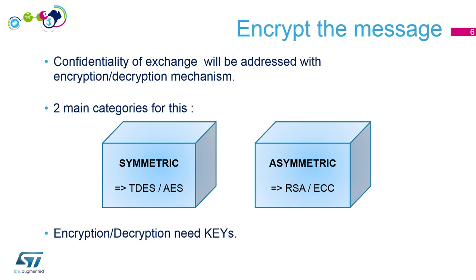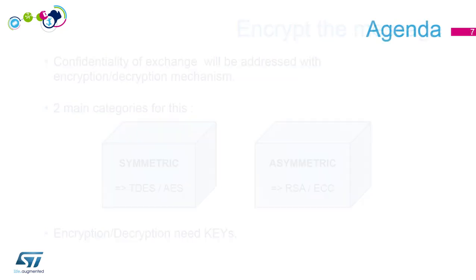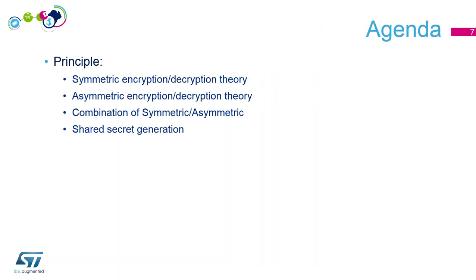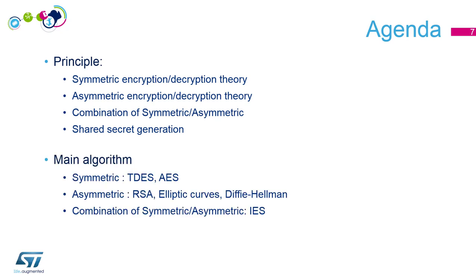For encryption and decryption, we will need keys. In this MOOC, we won't address how to protect those keys, but only how we use them. Our agenda: first the principles — symmetric encryption/decryption, asymmetric encryption/decryption, then a combination of both, and how we can generate a shared secret. Then we will talk about the main algorithms. For symmetric, it will be 3DES and AES. For asymmetric, we will talk about RSA, elliptic curves, and Diffie-Hellman, then the combination of both.